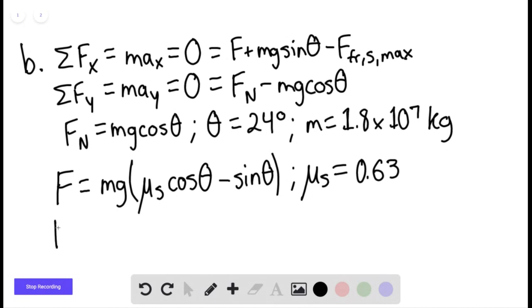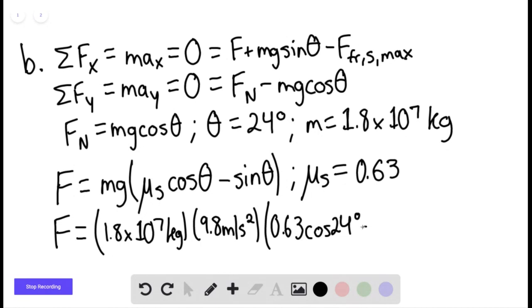So the force applied would be equal to 1.8 times 10 to the 7th kilograms multiplied by 9.8 meters per second squared times 0.63 cosine of 24 degrees minus sine of 24 degrees.